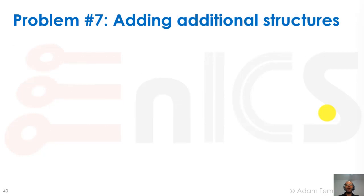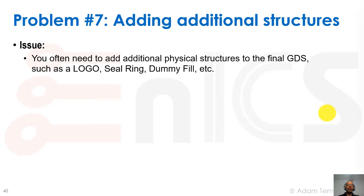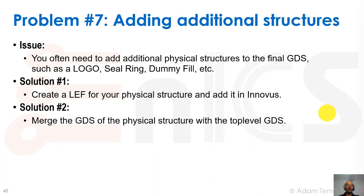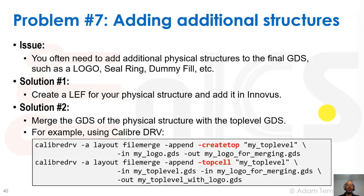Problem number seven: adding additional structures. You often need to add additional physical structures to the final GDS, such as logo, seal ring, dummy fill, etc. Solution one — the preferred solution — is to create a LEF for your physical structure and add it in your place and route tool so it's already merged into the final GDS in the right place. If that's not possible, solution two is to merge the GDS of the physical structure with the top-level GDS. Calibre provides a tool called DRV for these file merges, which I'll discuss more in the next part of the lecture.